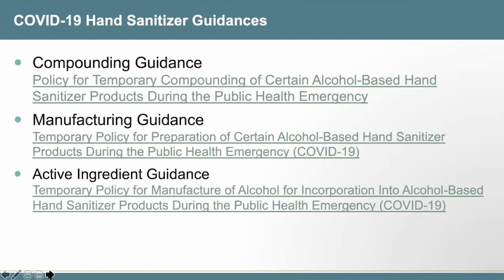The three guidances allow entities that are not currently registered drug manufacturers to register and make alcohol-based hand sanitizers. Pharmacies and registered outsourcing facilities can compound certain alcohol-based hand sanitizers. Alcohol production firms can produce alcohol for making hand sanitizers, provided they follow the conditions outlined. These guidances apply to both consumer and healthcare antiseptic hand rub products, but not to any other type of OTC antiseptic product.